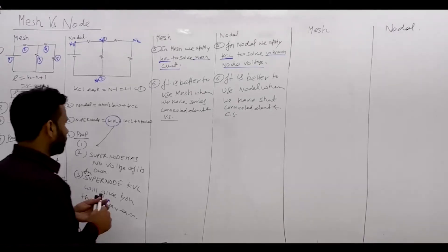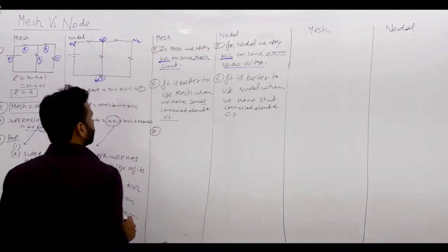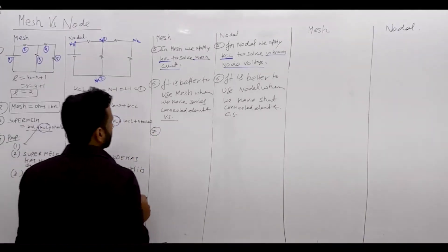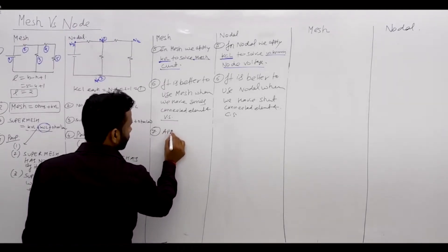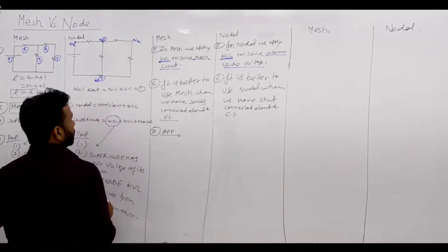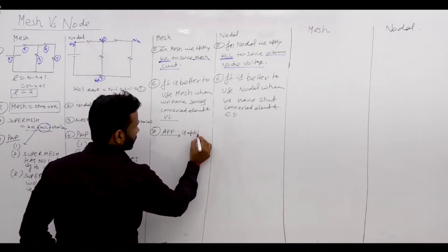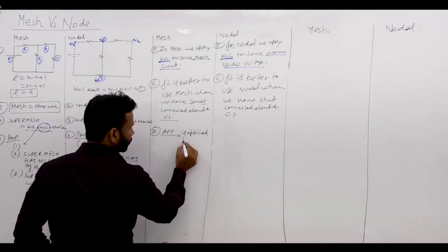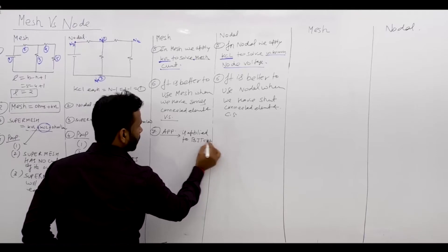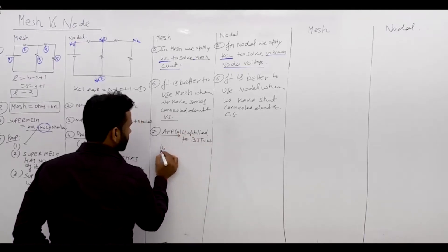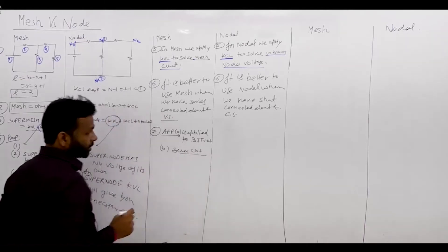Point 7 is about applications. Mesh analysis is applied to planar circuit problems and series circuits, because in a series circuit current is the same throughout but voltage differs, so we apply the voltage rule (KVL).